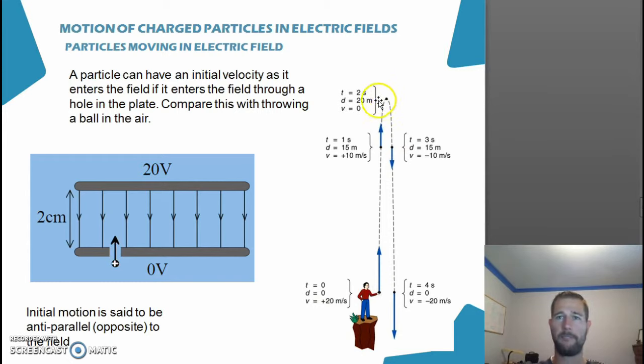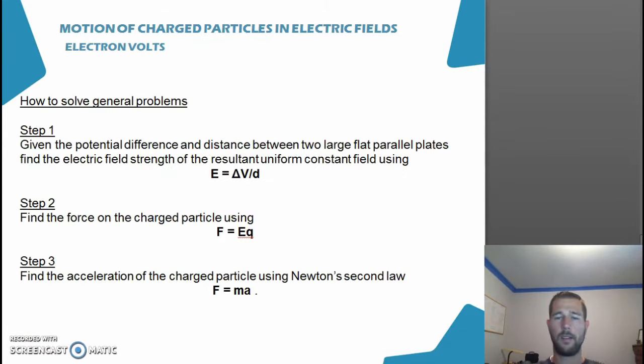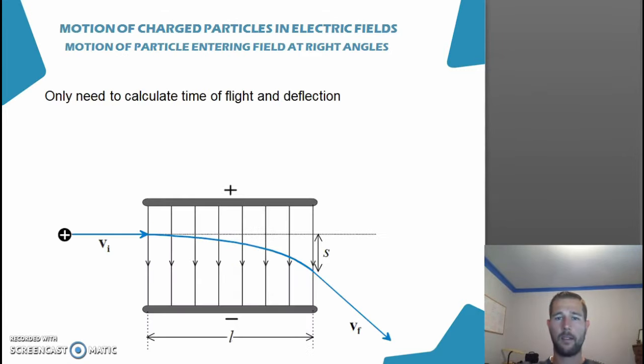We have a final velocity here in the first part of the flight of zero meters per second. A typical question will first find the electric field strength and the force on the particle. We can equate the force on the particle with Newton's second law to find the acceleration.